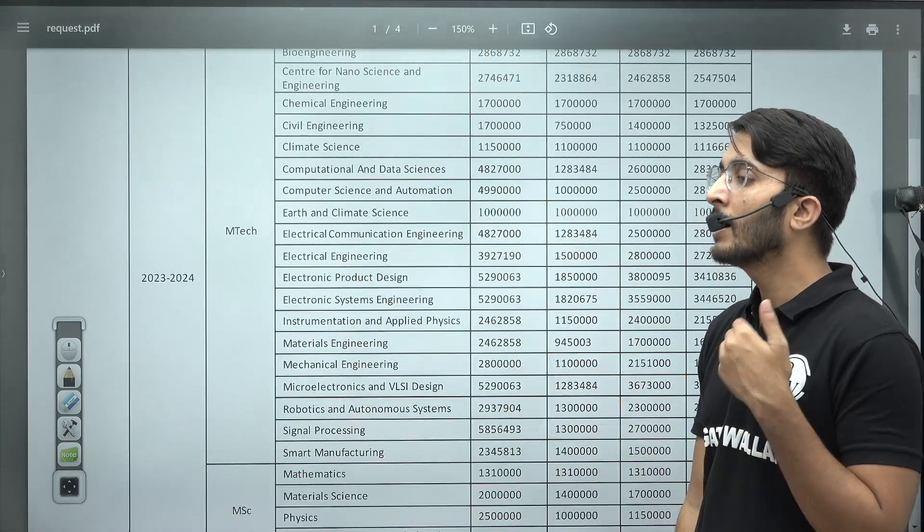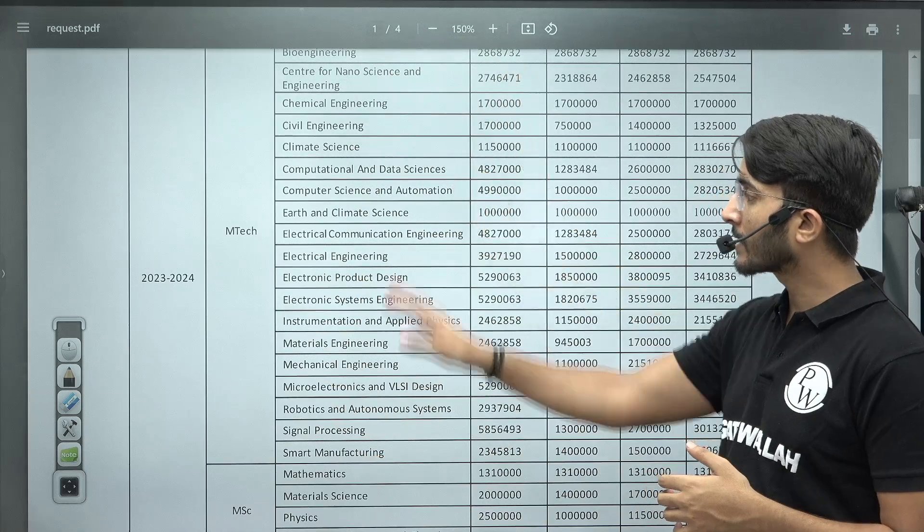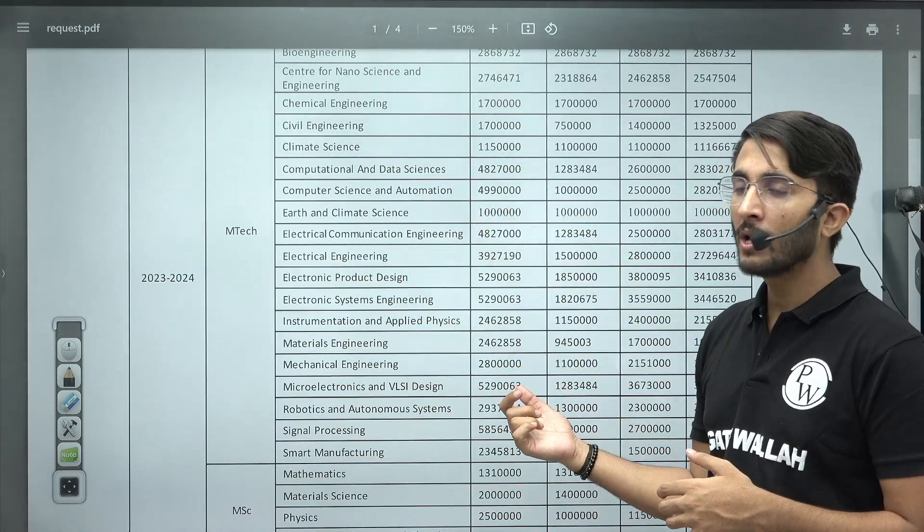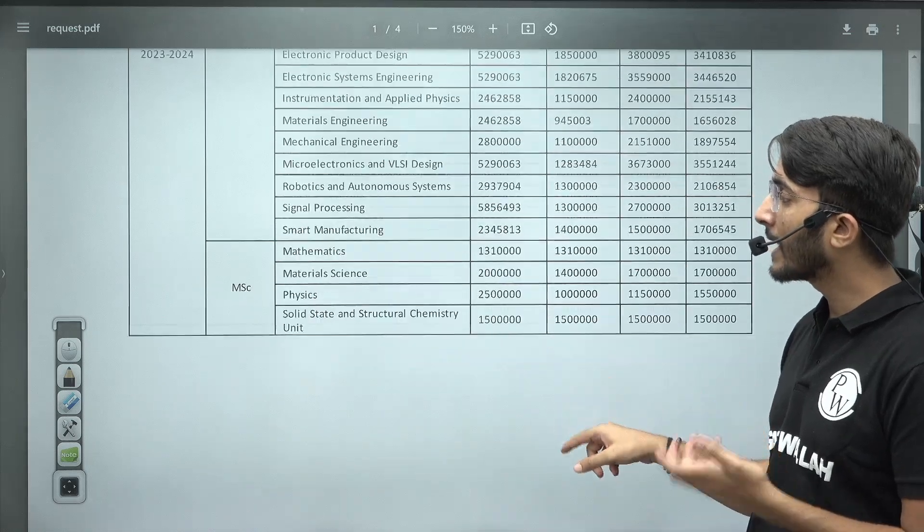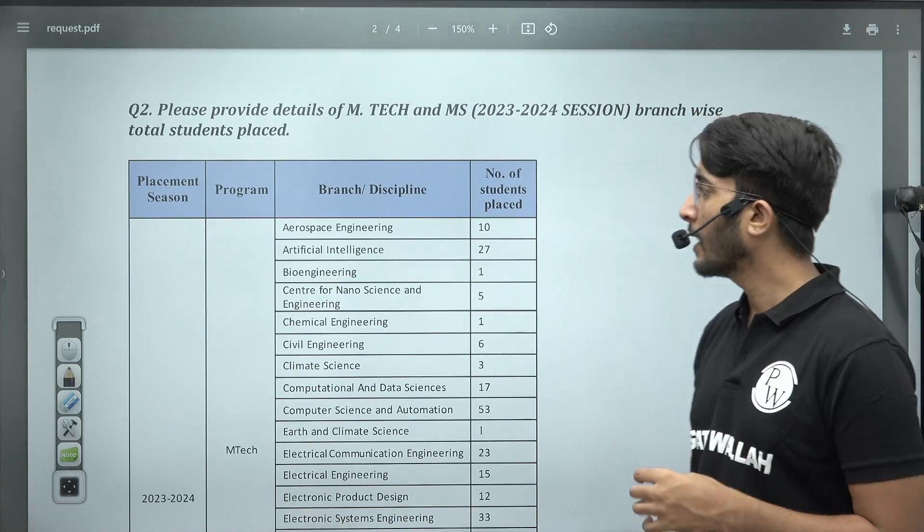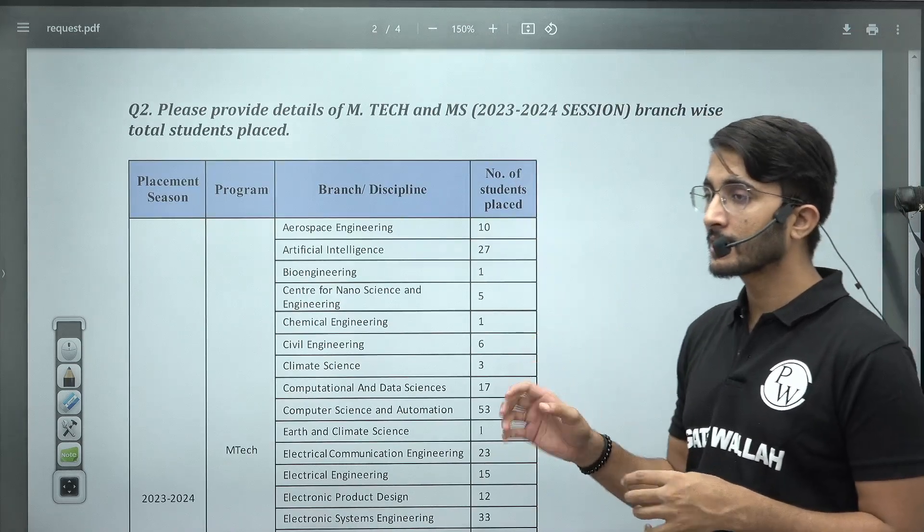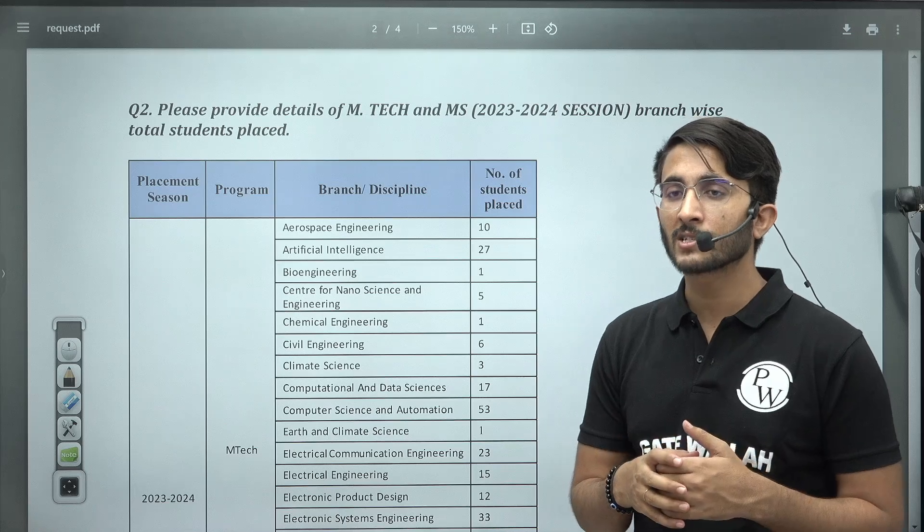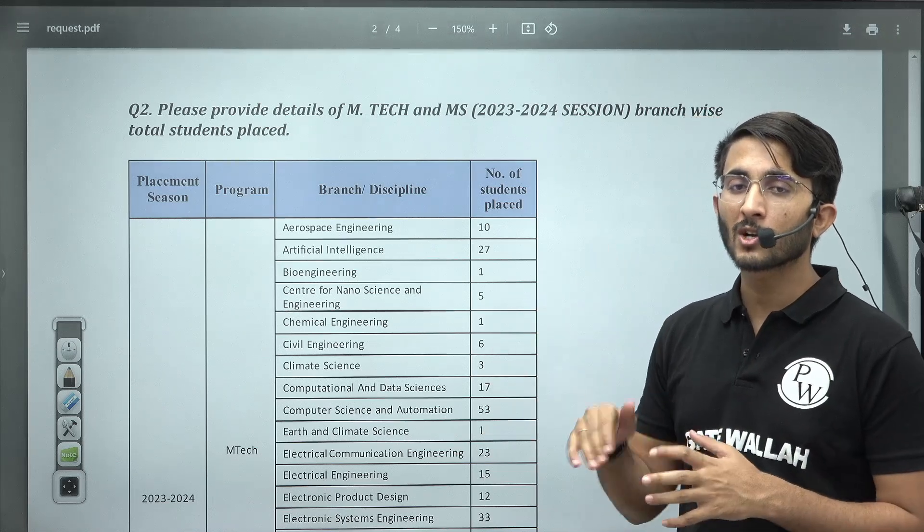So guys, all types of M.Tech courses whatever IISc is offering, all the data will be provided in this particular PDF and you will get lots of ideas like which course is best for you as per your GATE score. And guys, many courses of IISc even take admission through average GATE score, not all GATE course cutoffs are high, so you can choose those courses because placement is also up to the mark on those particular courses too.